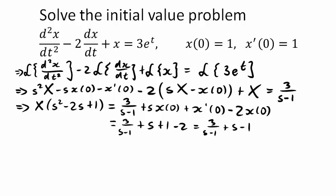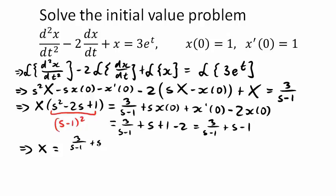Now dividing both sides by s² - 2s + 1. Before doing this, notice that s² - 2s + 1 is simply (s - 1)². Dividing the right-hand side by (s - 1)², let's do this in two steps by repeating the right-hand side and dividing the whole lot by (s - 1)².